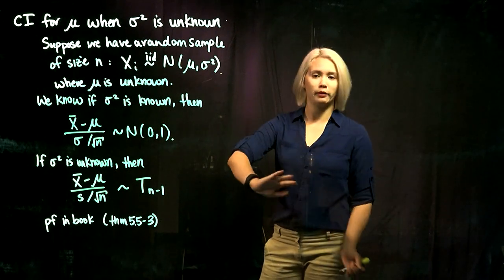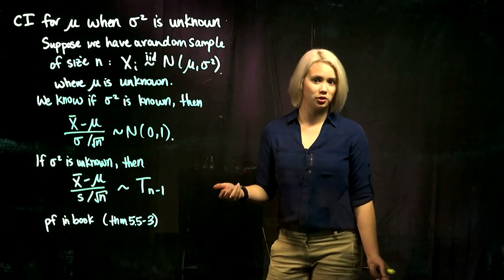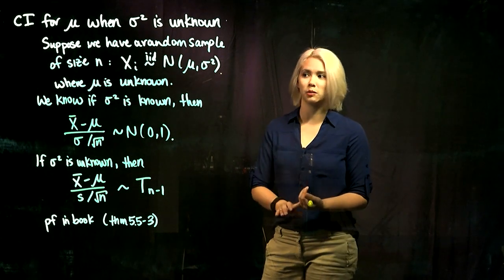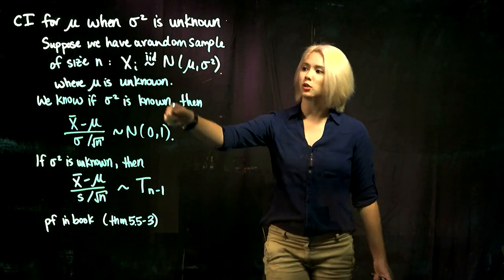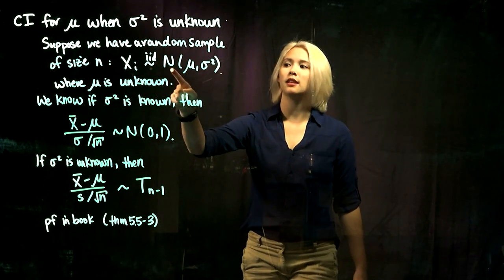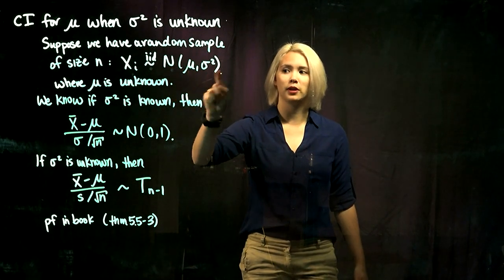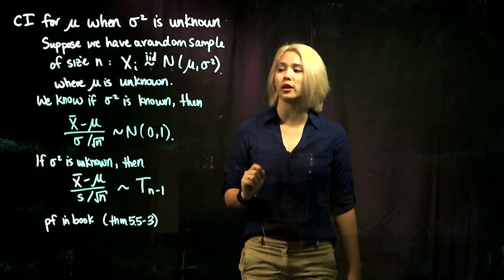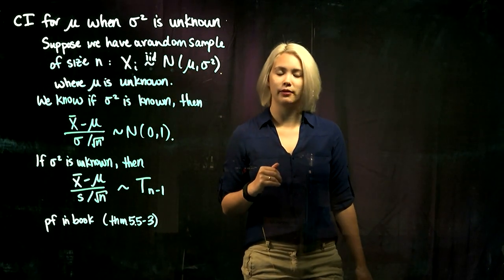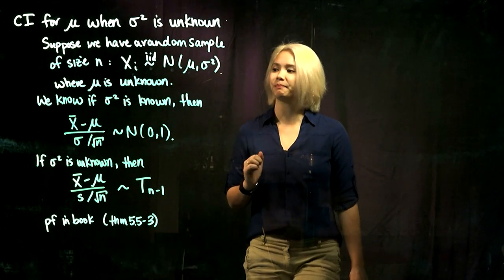So what's our setup? We have a random sample of size n from a normal distribution with mean mu and variance sigma squared. So we have these x_i's that are iid from a normal distribution with mean mu and variance sigma squared. And mu is unknown, which is why we're trying to get a confidence interval for it.